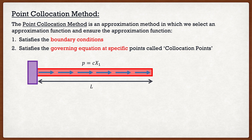Let's say that we had a one-dimensional beam here and it's loaded by a distributed load p which is equal to some constant c times x1. We know from the theory that this beam is going to be governed by the following differential equation, where EA multiplied by the second derivative of our displacement function is equal to negative p.